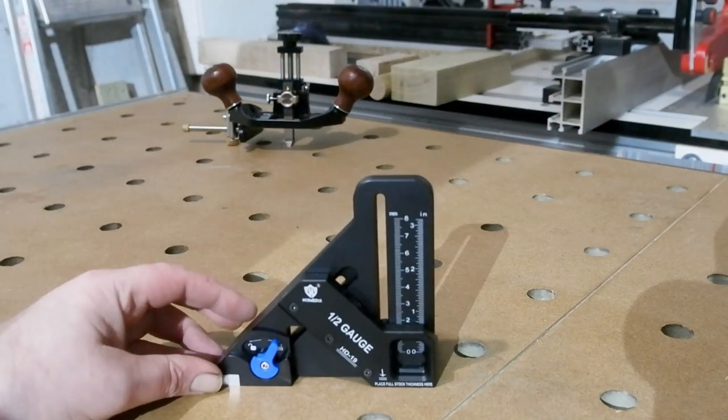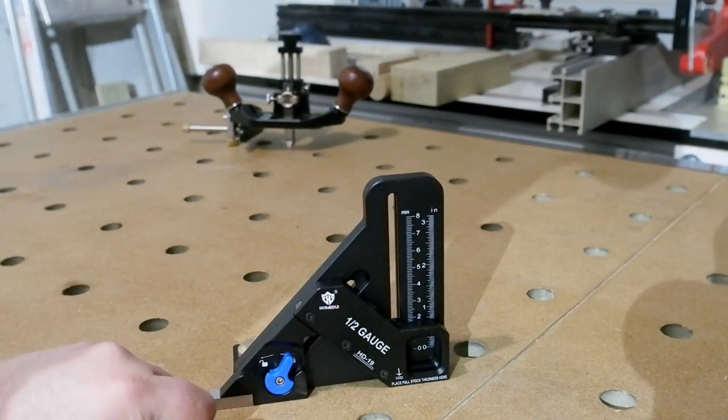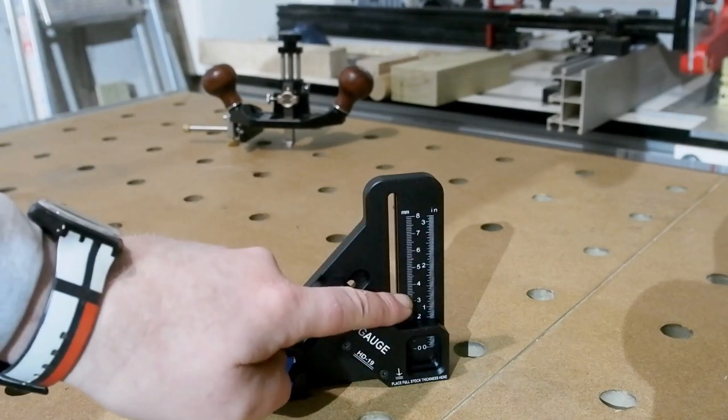So it's a Hong Doi HD-19 half gauge to give it its full title, and as ever with tools bearing the Hong Doi brand, it looks and feels beautifully built in aluminum, steel, and brass.